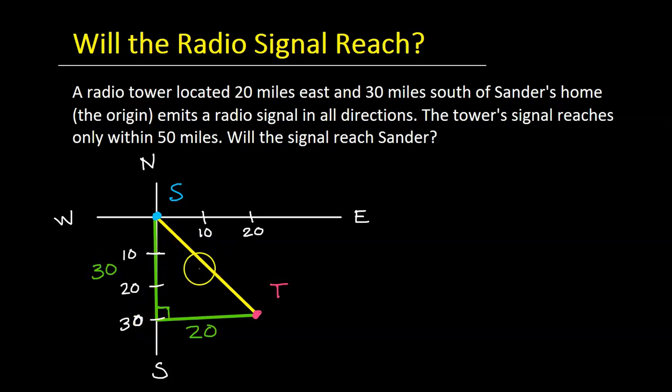So it's really just a matter of solving for the hypotenuse, which I will simply call x. So that'll be the distance between Sander's and the tower. Of course, the Pythagorean theorem will solve this for us.